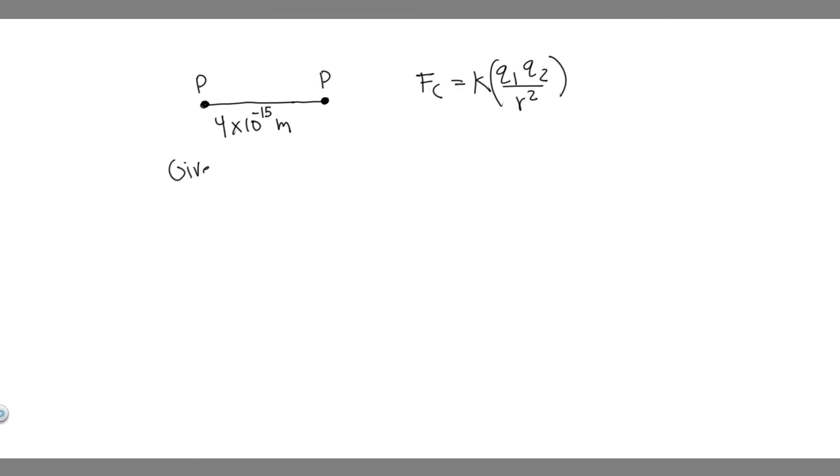So let's just write down what we're given first. They tell us the distance between these two particles and essentially what that is is the radius. So in this formula, they give us the radius and so they tell us that the radius is 4 times 10 to the minus 15 meters. So we know the radius and then we need to determine K, Q1, and Q2.